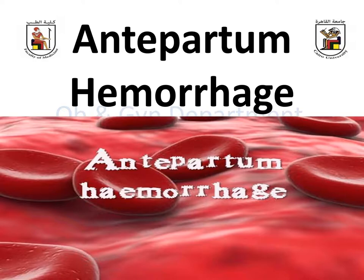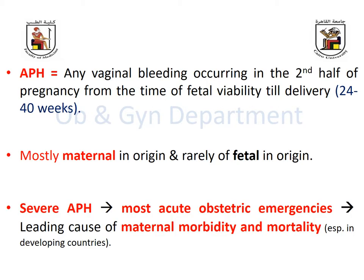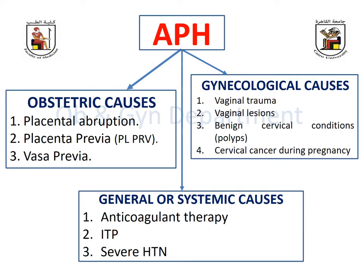Today is the second part of our topic on antepartum hemorrhage. Antepartum hemorrhage is vaginal bleeding occurring in the second half or late pregnancy, dating from the time of fetal viability but before delivery. It is mostly maternal in origin, rarely fetal, and is considered one of the most important acute obstetric emergencies, as it is a leading cause of maternal and fetal morbidity and mortality, especially in developing countries. We have three general categories: obstetric, gynecological, and general or systemic causes.